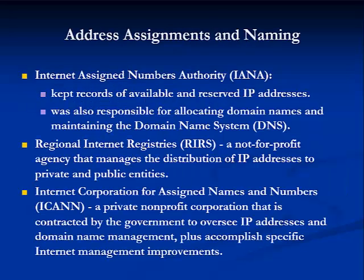IP address and domain name management is currently overseen by ICANN, the Internet Corporation for Assigned Names and Numbers. ICANN is a private corporation contracted by the U.S. Department of Commerce. It assumes financial and administrative control of functions previously performed by IANA, the Internet Assigned Numbers Authority, which is based at the University of Southern California and still performs much of the Internet's top-level system administration.